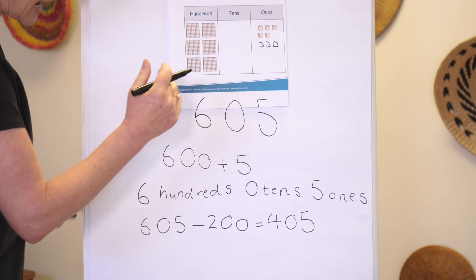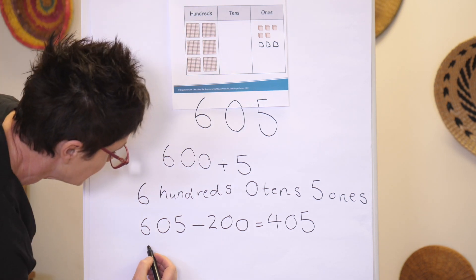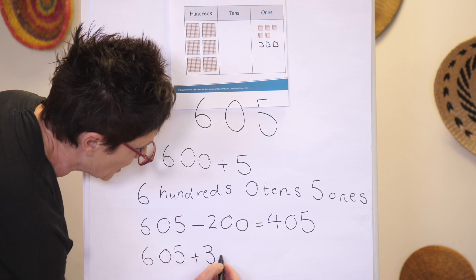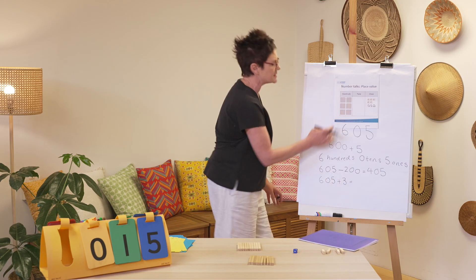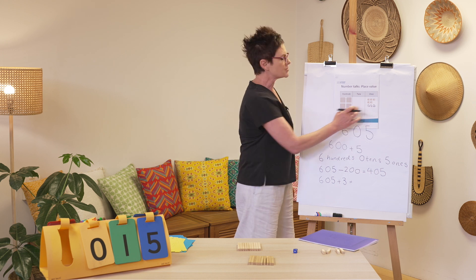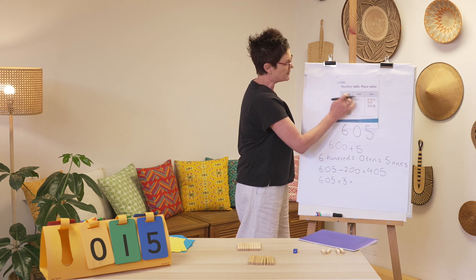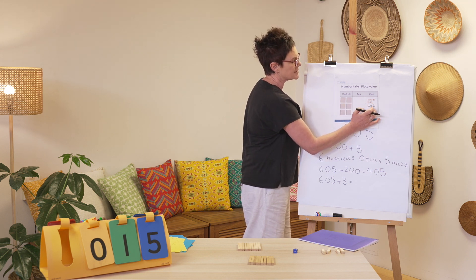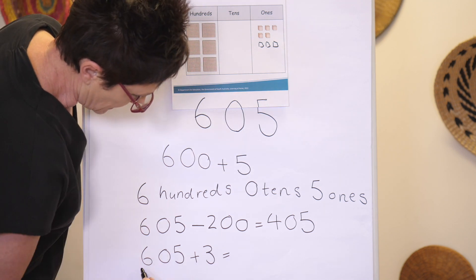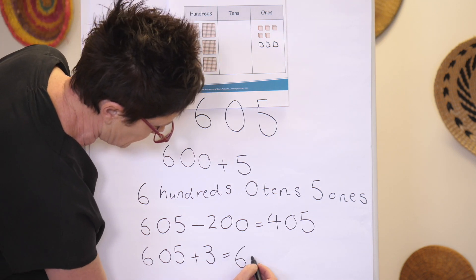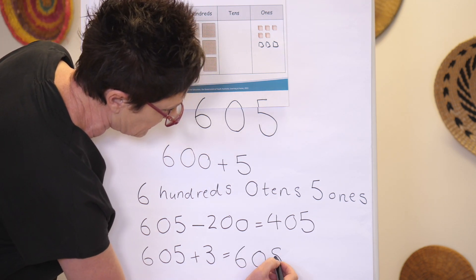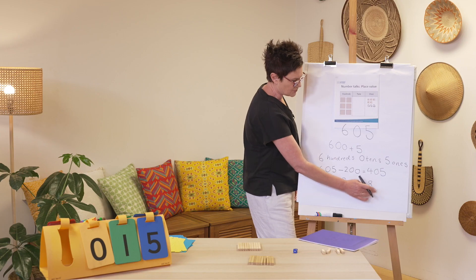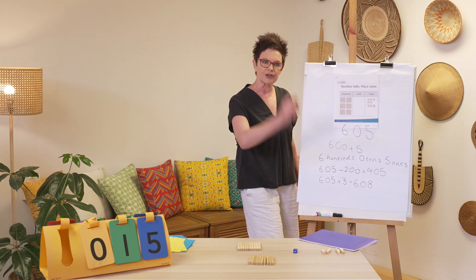Now I'm going to add some ones — another three ones. Our number sentence will look like this: six hundred and five add three. What is three more than six hundred and five? Let's check: I have six hundred, none of these, and five, six, seven, eight. My answer is six hundred and eight. Six hundred and five plus three is six hundred and eight. Well done everyone, we're warmed up and ready to go.